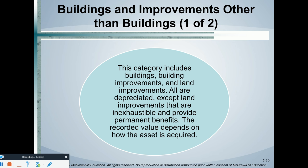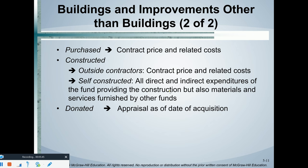Buildings and building improvements are recorded as we purchase or construct them. We can purchase the building at the contract price plus all closing costs, or construct it. If we construct it, we can use outside contractors — their contract price and all costs — or if we self-construct, we'll have our direct and indirect expenditures: equipment, supplies, labor, supervisory labor. All of that gets capitalized as part of the building for the government-wide statements. For the fund financial statements, they are recorded as capital expenditures.